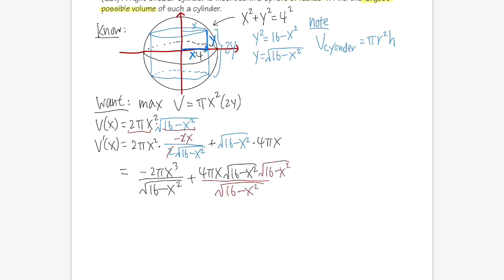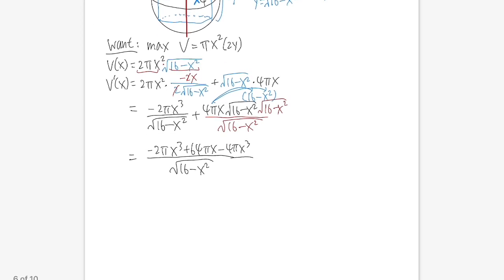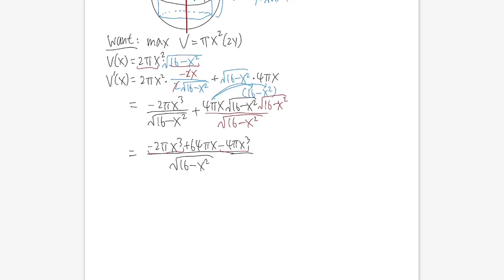Both terms share the denominator √(16 − x²). The numerator becomes: −2πx³ + 4πx·(16 − x²). Distributing: 4πx·16 = 64πx, and 4πx·(−x²) = −4πx³. Combining −2πx³ and −4πx³ gives −6πx³ + 64πx, so V' = (−6πx³ + 64πx) / √(16 − x²).